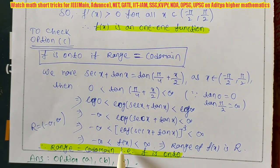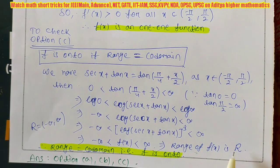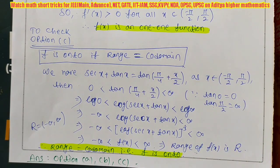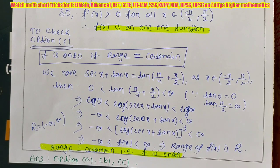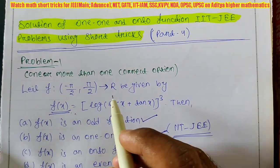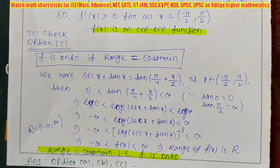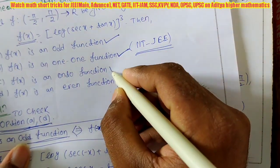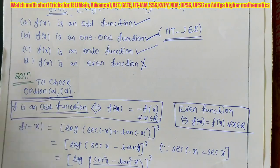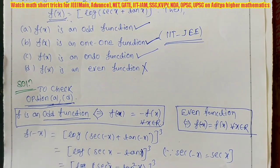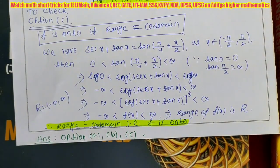Since f(x) ∈ ℝ, the range of f is ℝ. The co-domain given in the question is also ℝ. Therefore range = co-domain, which means f is onto. Option C is also correct. So the final answer for this multi-option question is options A, B, and C are correct. Only option D is incorrect.